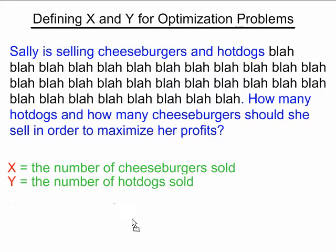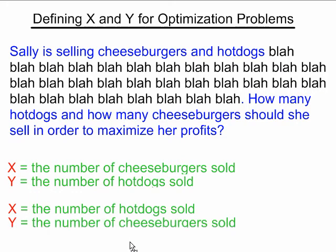But what if you decide to make x equal the number of hot dogs and y equal the number of cheeseburgers instead? It doesn't matter. Either way, you should get to the right answer at the end of your optimization problem. This is how you define your variables x and y for optimization.